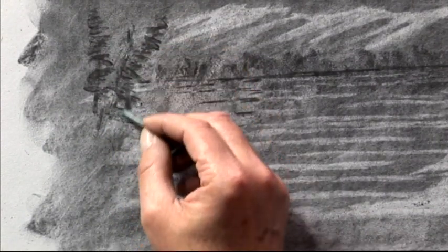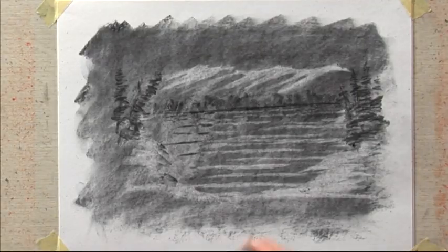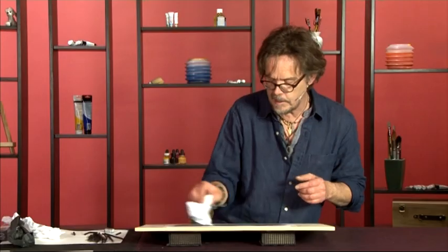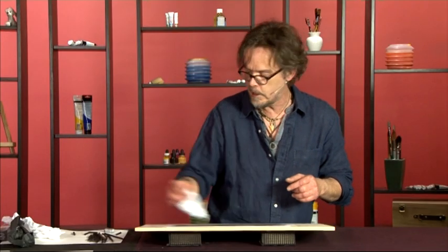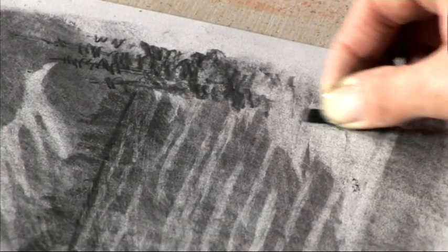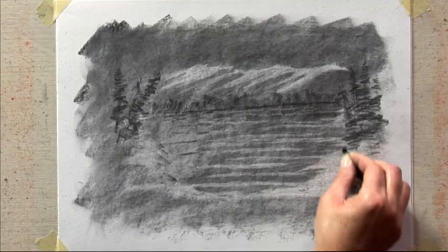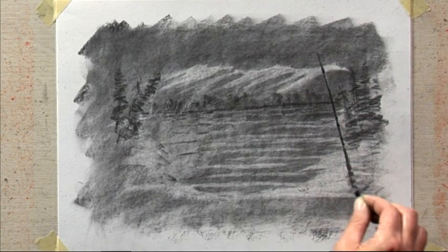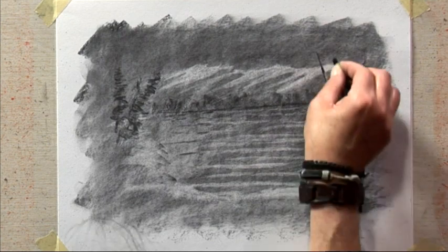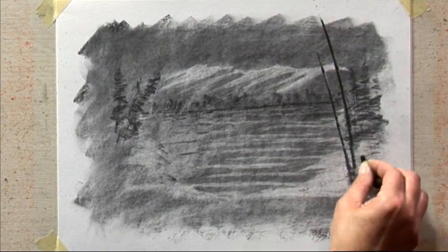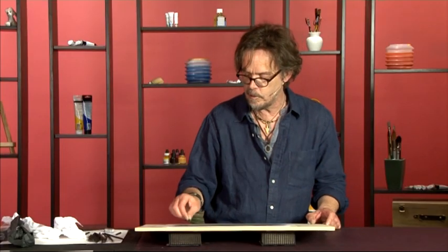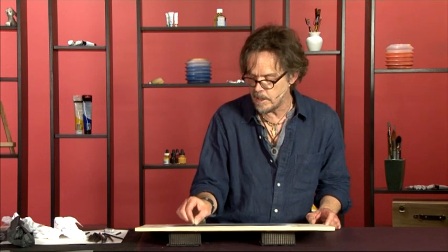And then we'll do some trees in the foreground. Again if you get any dust just waft it off with your kitchen paper. If you rub it with your finger of course then it's going to smudge. So we don't want that. So let's have a nice stronger tree right in the foreground. Using the edge of our stick of charcoal. And pressing on it a little bit more now because we want this group of trees to be even darker.